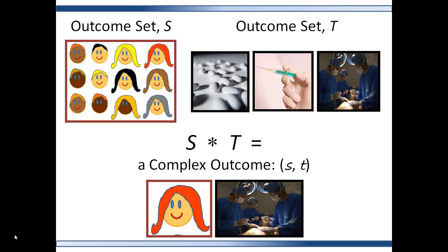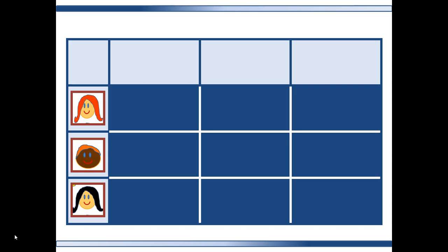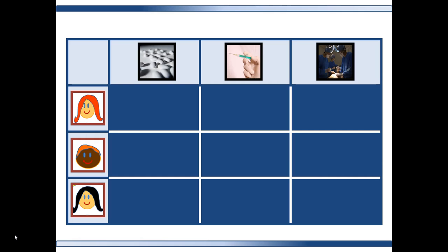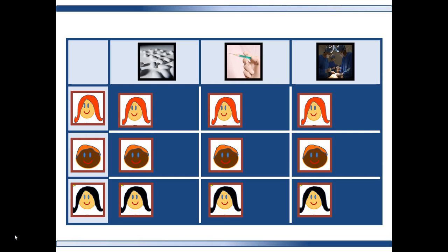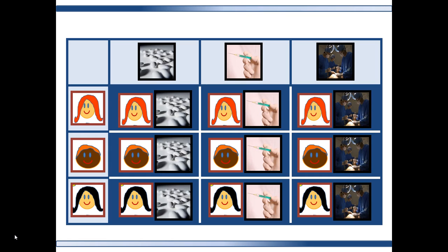So how do you model this complex outcome? You can create a space called the product space — it is the cross product of the two outcome sets, so each element in the product space is a pair of items. Using a table to represent this: the rows represent the patient outcome set, the columns represent the treatment outcome set, and the cells represent all possible outcomes — each patient matched with each treatment. This encompasses each possible pair of outcomes. The product set is the combination of all elements of each outcome set with each other.